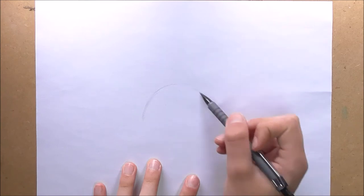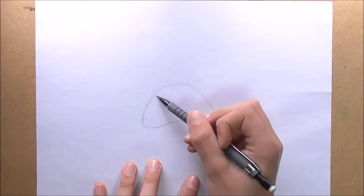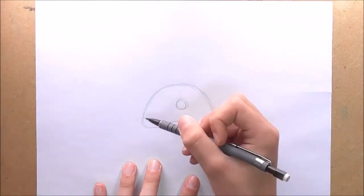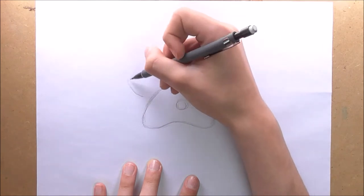Right, so this paw print is very easy to do. All you need to do is get a bit of scrap paper to start off with and just draw out your design. Now I am doing a generic kind of dog paw print, however you can do any type of animal footprint that you'd like. You can apply the same technique to any of them.